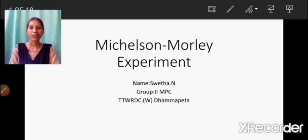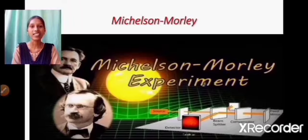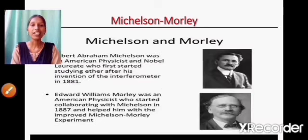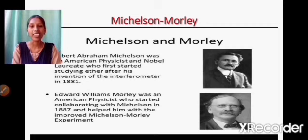The Michelson and Morley experiment was performed between April and July in the year 1887. Albert Abraham Michelson was an American physicist and Nobel laureate who first started studying ether after his invention of the interferometer in 1881. Edward William Morley was an American physicist who started collaborating with Michelson in 1887 and helped him with the improved Michelson-Morley experiment.